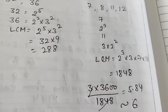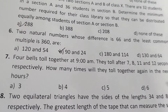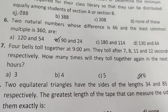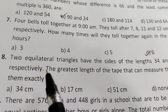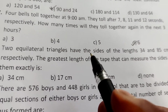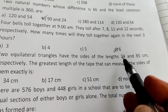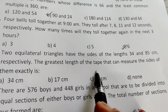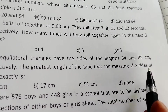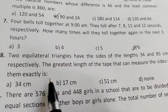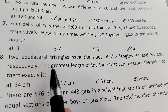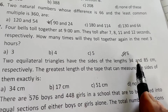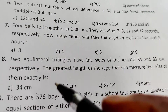The bells will ring together 6 times in 3 hours. Question 8: Two equilateral triangles have sides of length 34 and 85 cm respectively. The greatest length of tape that can measure the sides of both exactly is the HCF of 34 and 85, which is 17 cm.